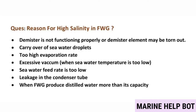Reasons for high salinity in fresh water generator: demister is not functioning properly or demister element may be torn; carryover of sea water droplets; too high evaporation rate; excessive vacuum; when sea water pump temperature is too low; sea water feed rate is too low; leakage in the condenser tube; when the fresh water generator is distilling more than its capacity.